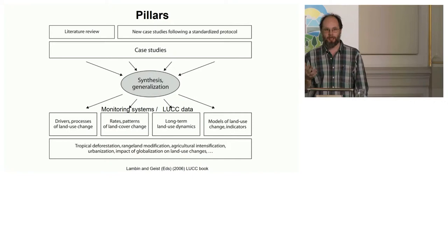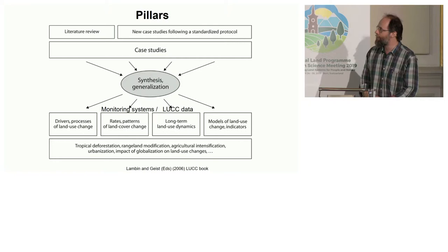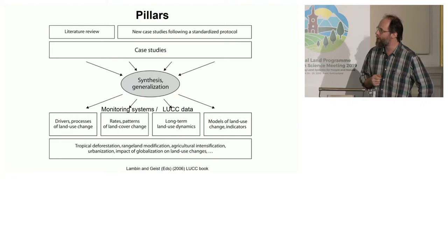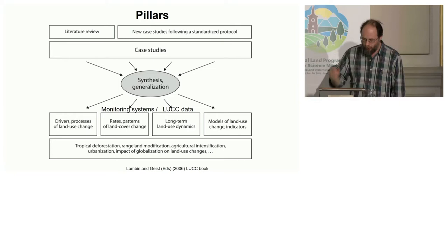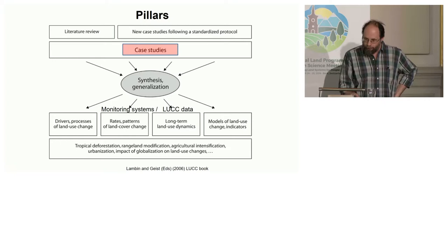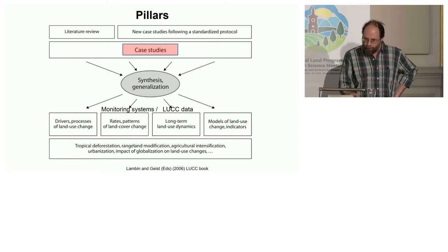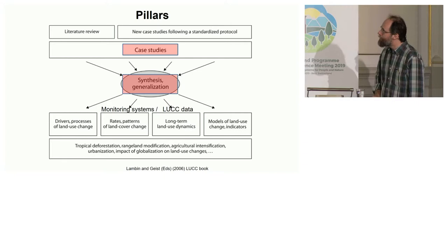Across all of that, the basic pillars and methodological approaches through which land system science functions have remained, to a large extent, rather stable over time. This is a figure taken from the 2006 landmark book on land use and land cover change edited by Lambert and Gays. Land system science works with monitoring systems that produce all kinds of datasets, case studies that try to connect people and pixels in specific locations, and larger-scale quantitative analysis at the scale of nations or the entire globe.